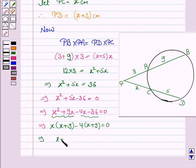Now, taking x plus 9 common, we have x plus 9 into x minus 4 is equal to 0.